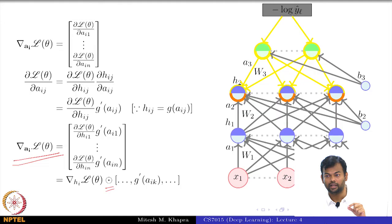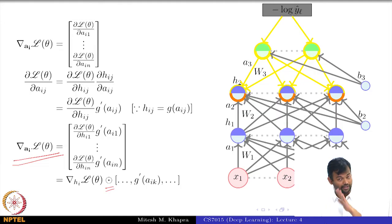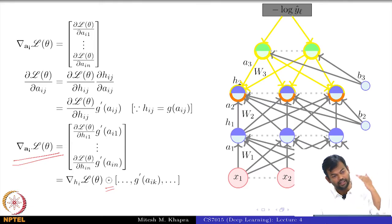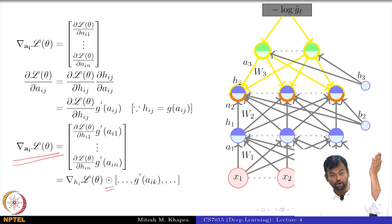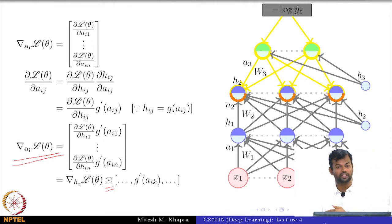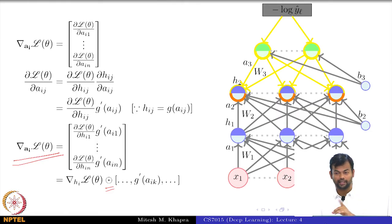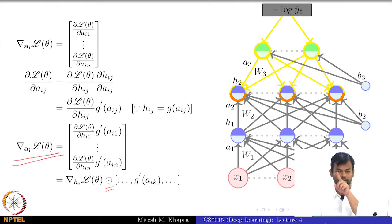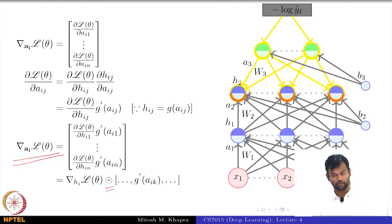We wanted to find the gradients with respect to all these parameters. We realized this can be done using the chain rule, because there is a path from the output — which is the loss function — to any of these weights. We just need to follow that path and apply the chain rule smartly, summing up the derivatives across all the paths that lead to that weight.